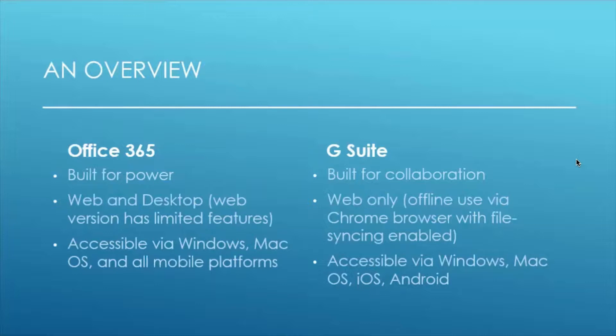Both Office 365 and G Suite are available via web. However, Office 365 also has all of its desktop options — the original programs we're used to having right on the computer. There is a Microsoft Word, Excel, and PowerPoint you can use on the web for minor edits, sharing, and saving files. G Suite, on the other hand, is online only. You can use it offline with certain limitations, but there are no native programs on your computer. If you primarily use desktop applications, Office 365 has the edge.